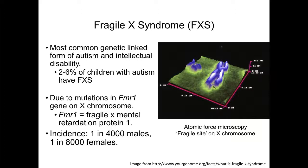The name of this gene is based on its chromosomal appearance. It is located at the end of the chromosome, and the genetic changes in FXS cause the tip of the chromosome to look like it's about to fall off — hence the name Fragile X. The incidence of Fragile X syndrome is about 1 in 4,000 males and 1 in 8,000 females.